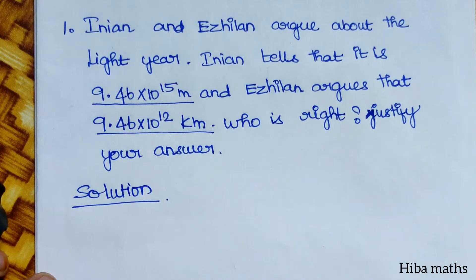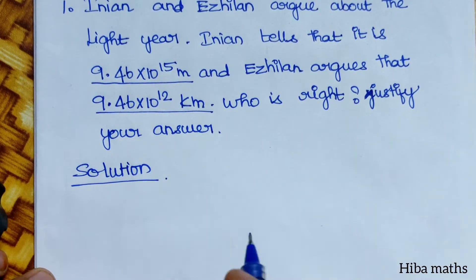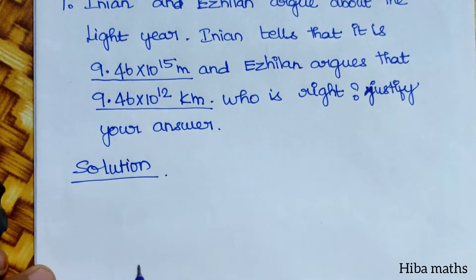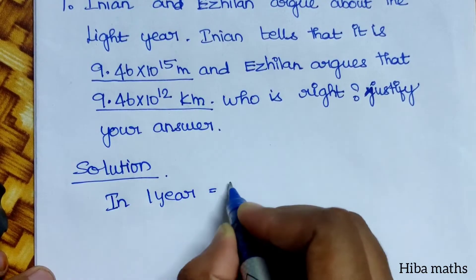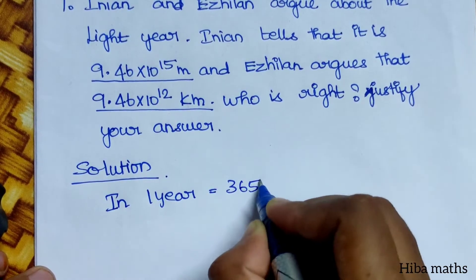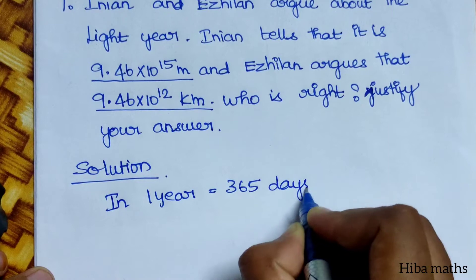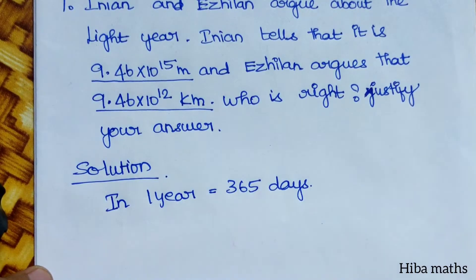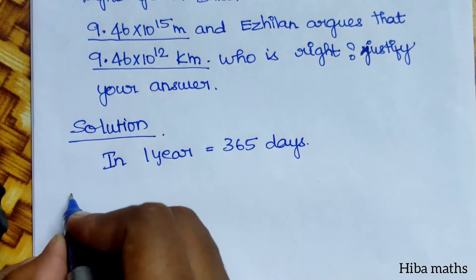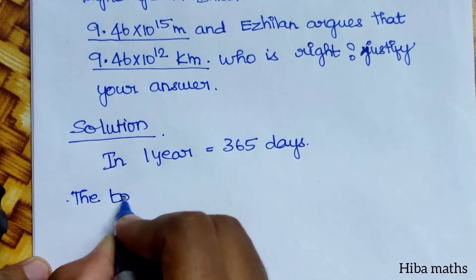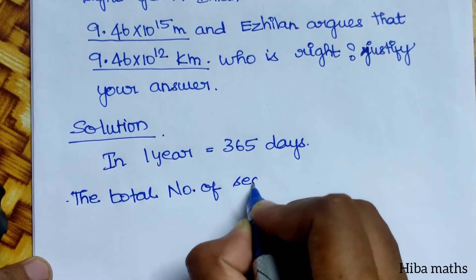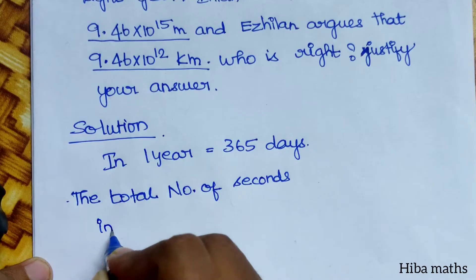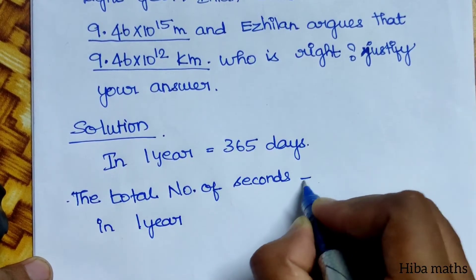Number 1: light year. Let's find who is correct. In 1 year, there are 365 days. From 365 days, we need to find how many seconds there are — the total number of seconds in 1 year.